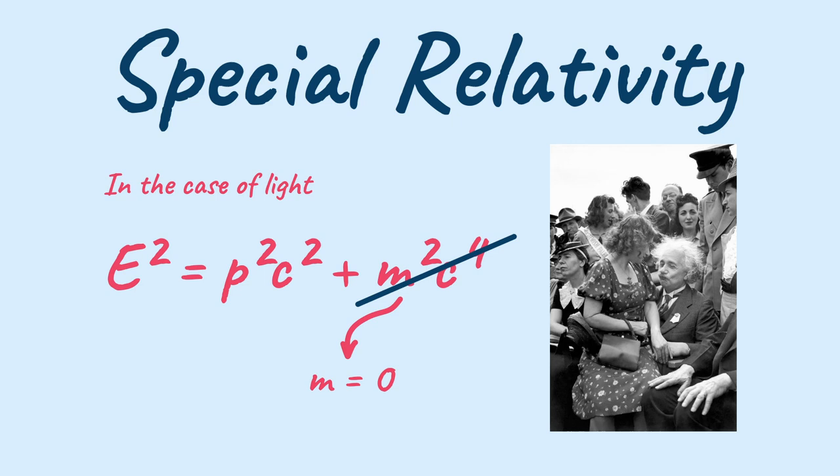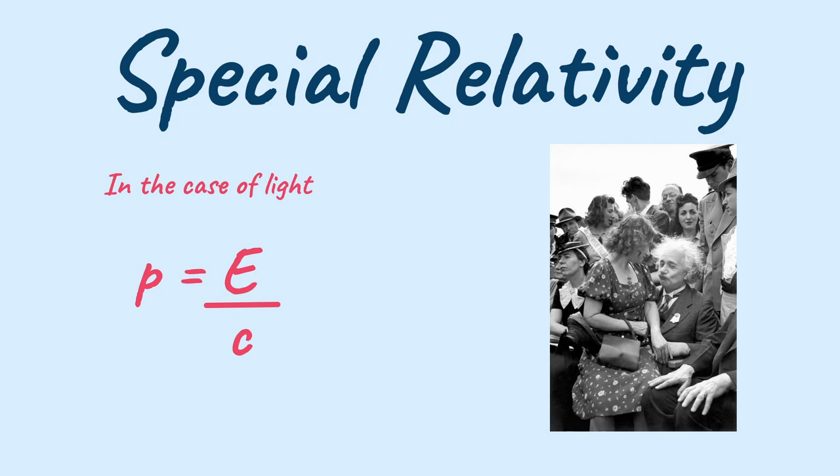So what we are left with is E squared equals P squared C squared. And when we transpose the values we get P squared equals E squared upon C squared. And we can further simplify it into P equals E by C.